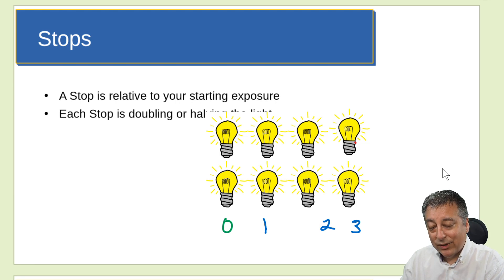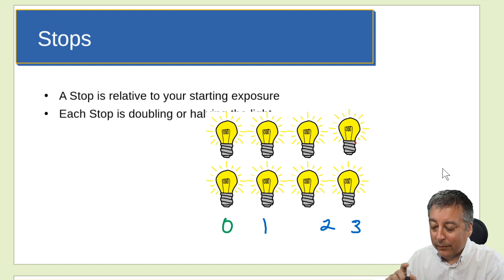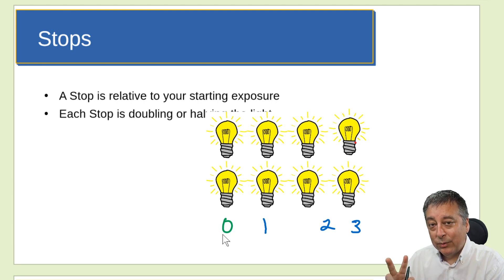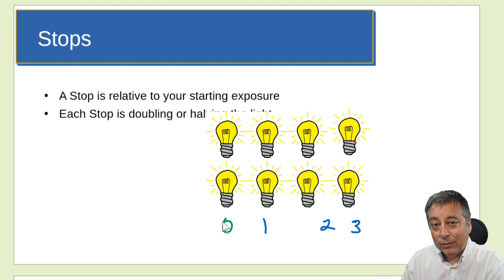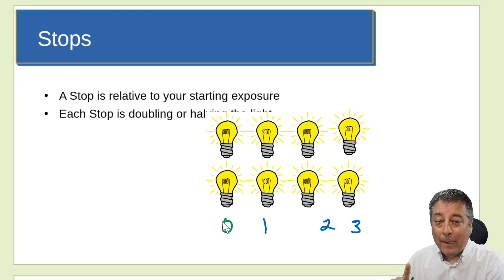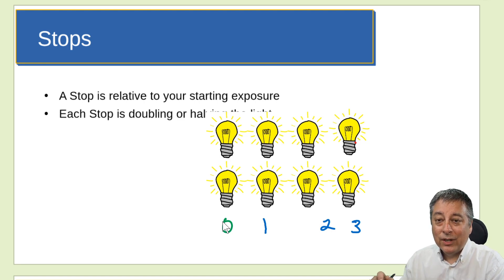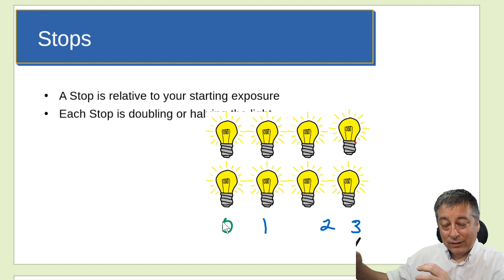The most profound thing about stops is that because it's doubling each time, each stop is actually quite a bit more light. Starting at zero with one light bulb, going up one stop gives us two light bulbs — twice as much light. Adding another stop means four light bulbs — four times brighter than our original single light bulb. And at three stops, we're eight times brighter than when we started. So increasing the number of stops exponentially increases the brightness, and the reverse is true.